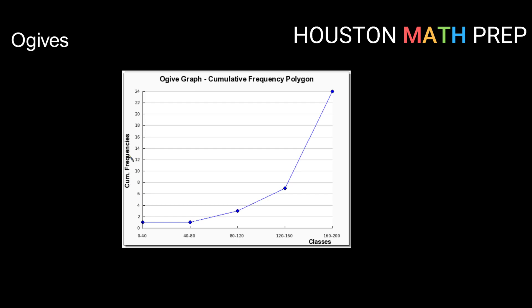So you'll notice that we label our vertical axis with cumulative frequencies, we still have our class labels along the bottom or the horizontal axis, and we have our dots at each cumulative frequency connected by a straight line.